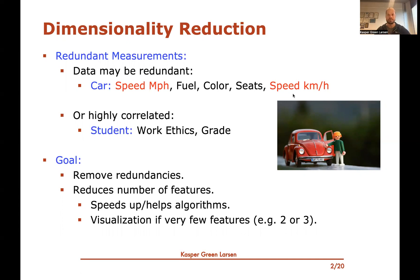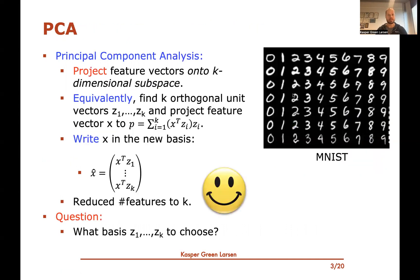In particular, if we can reduce down to two or three features, PCA becomes useful for visualization. The basic idea of principal component analysis is that we project our feature vectors onto a k-dimensional subspace. As we saw previously, this is equivalent to finding k orthogonal unit vectors z1 up to zk. Once we have those, we project a feature vector x, and the coefficients of x in this new basis are just the inner products of x with each of z1 through zk — giving a k-feature representation.